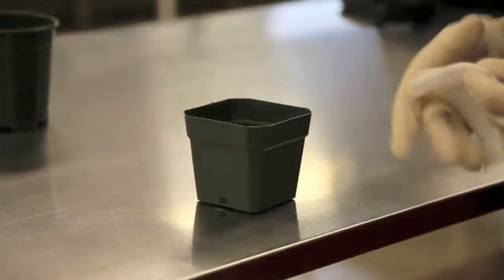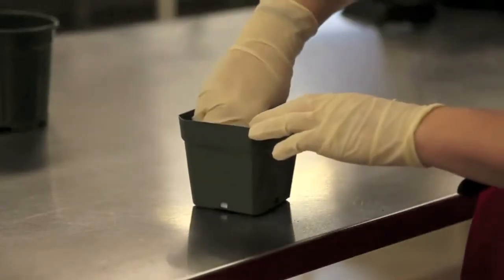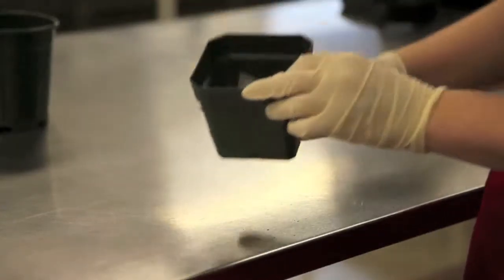Now it's time to prepare your pots. Start by placing a piece of cheesecloth at the bottom of each pot. This will keep your soil from escaping when you water them in the future.